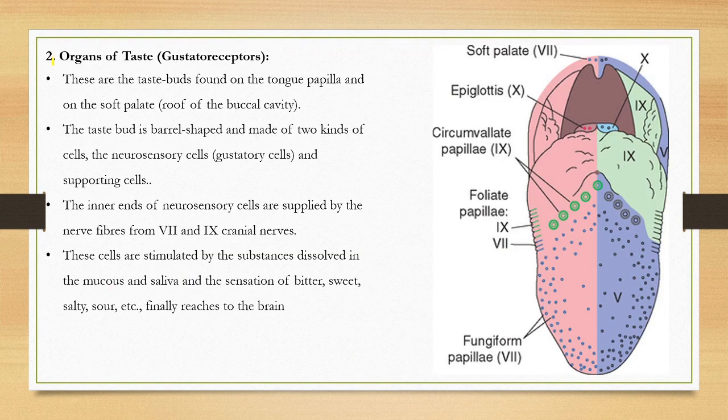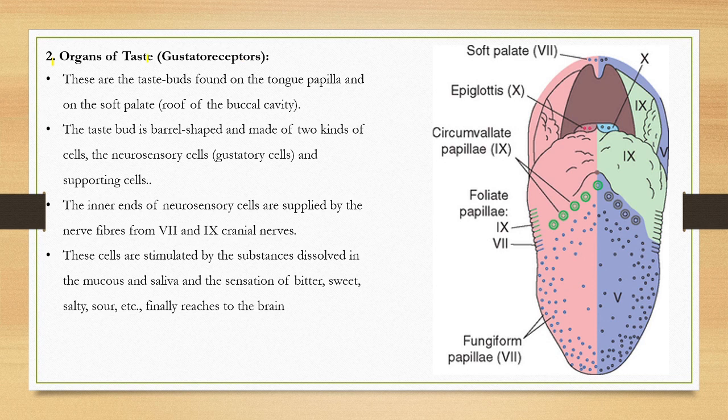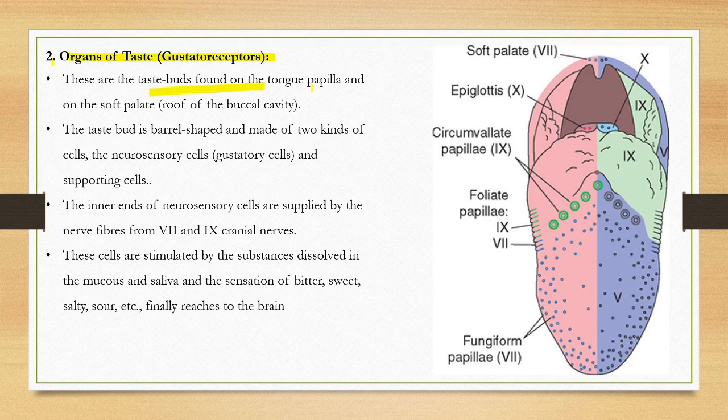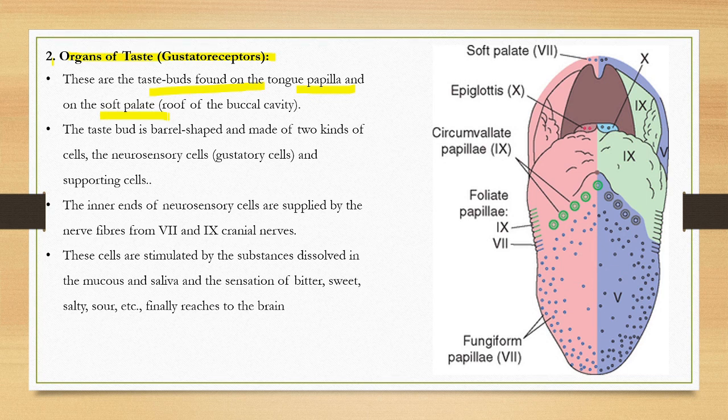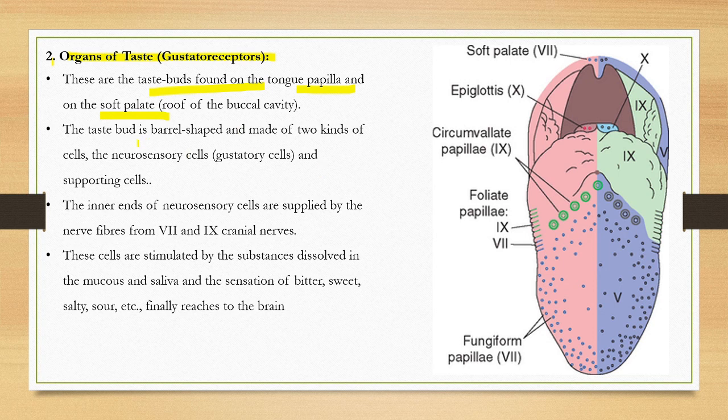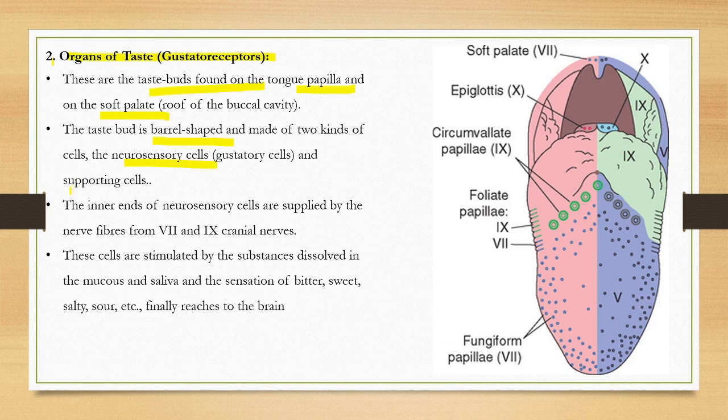Organs of taste, gustatory receptors. They are present as taste buds in the tongue. The taste buds are also present in the soft palate. The taste buds are made of two types of cells: neurosecretory cells and supporting cells.